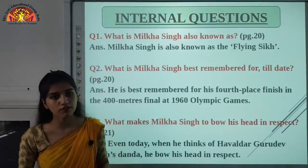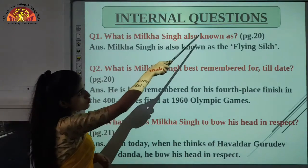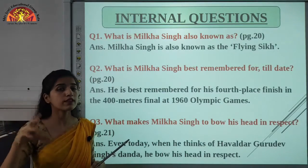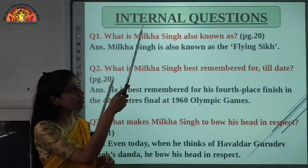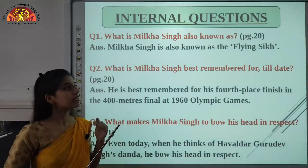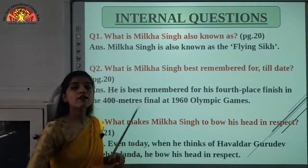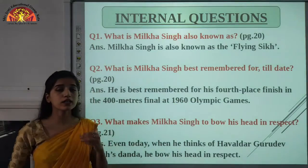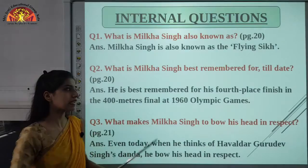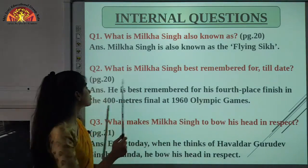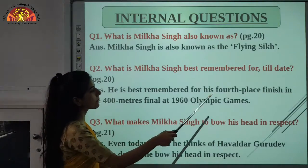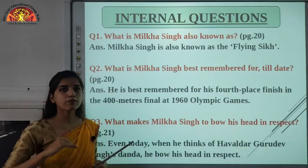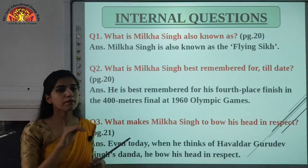Now we are going to mark the internal questions of this chapter. Question 1: What is Milka Singh also known as? This is on page number 20, on the first line of the introduction. Milka Singh is also known as the Flying Sikh. Question 2: What is Milka Singh best remembered for till date? He is best remembered for his fourth-place finish in the 400 meters final at the 1960 Olympic Games. This question is also on page number 20, the last fourth line of the introductory paragraph.